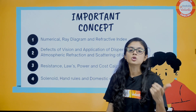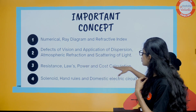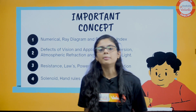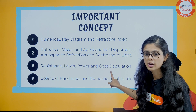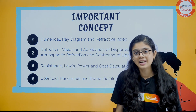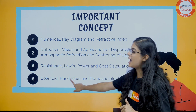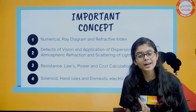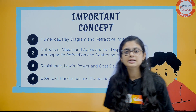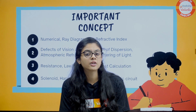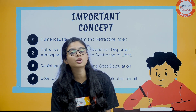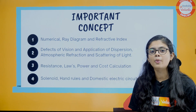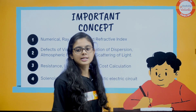Moving forward — laws: Joule's law and Ohm's law are also important. Power and cost calculation: P = VI, P = W/T, P = E/T — remember all these formulas. Cost calculation is also important. Moving towards magnetic effects of electric current: solenoid is extremely important. Then comes the hand rules — right-hand thumb rule or Fleming's left-hand rule. Hand rules are important because directions are asked in the paper many times. Domestic electric circuit is also important — they may ask about tungsten, fuse, live wire and all.